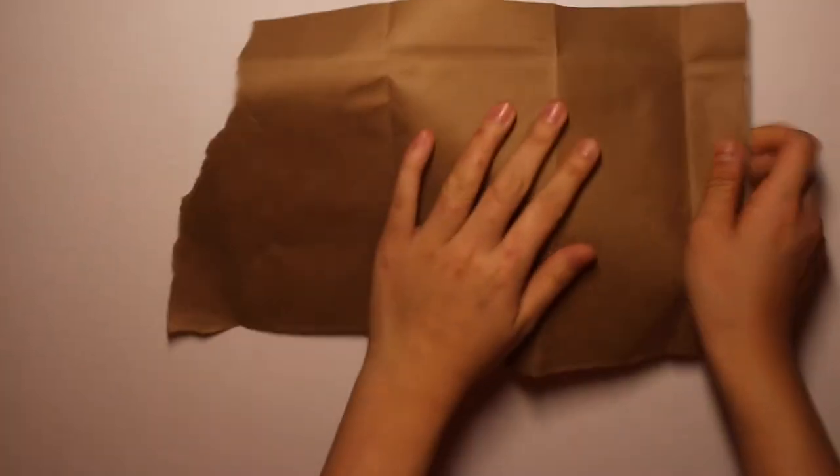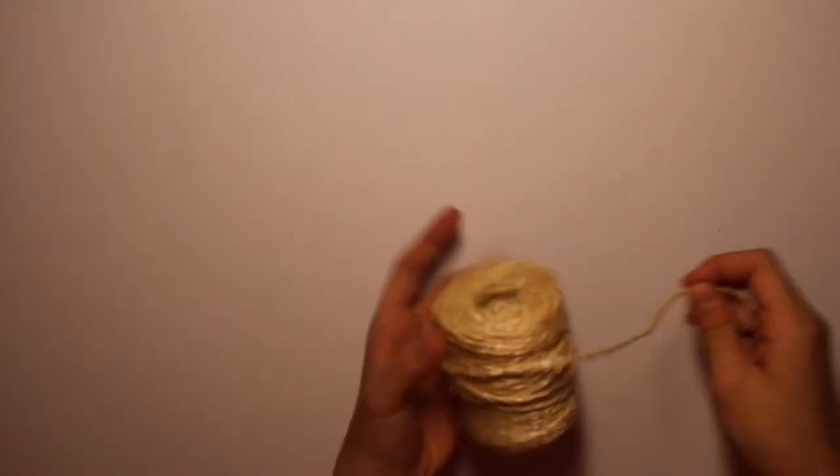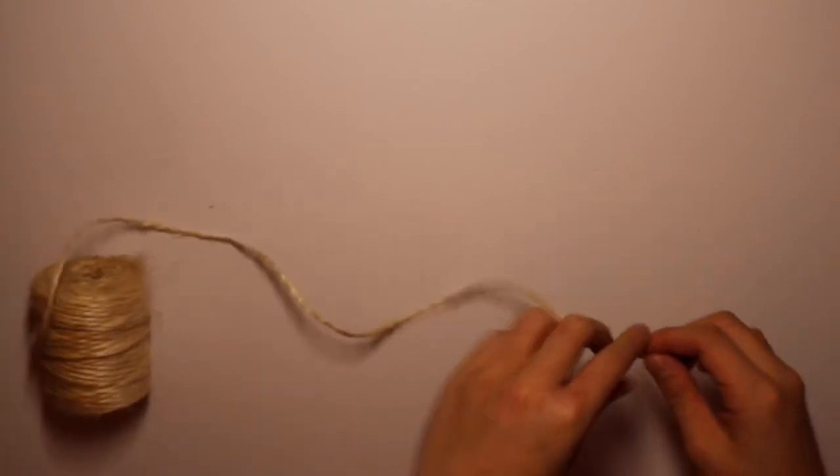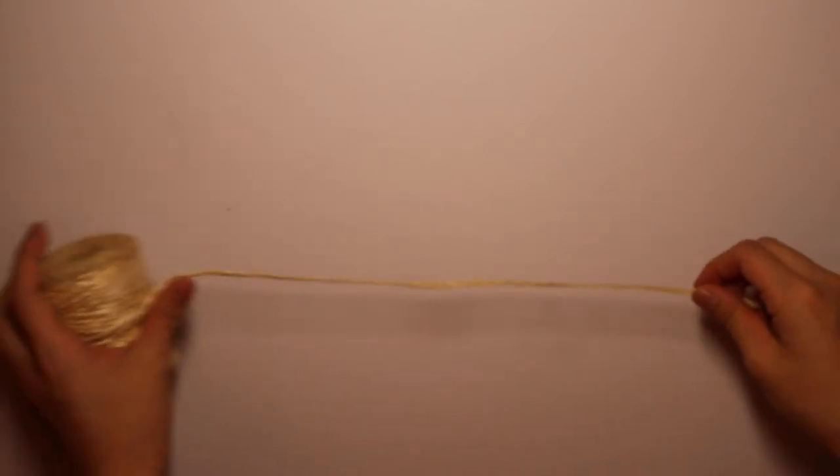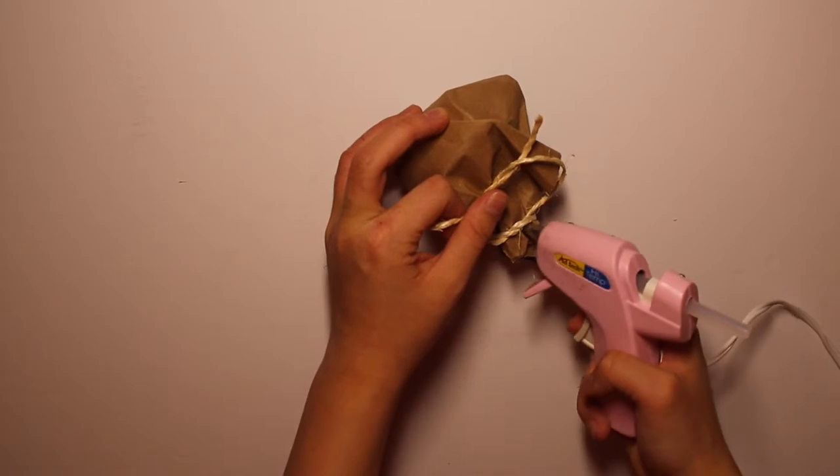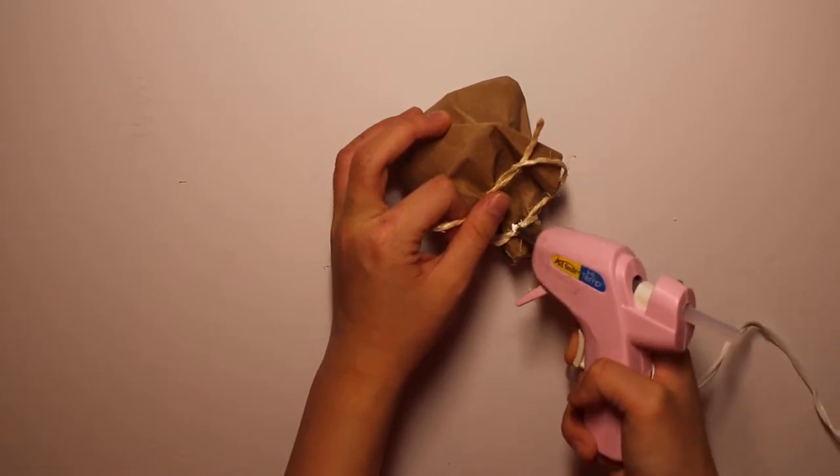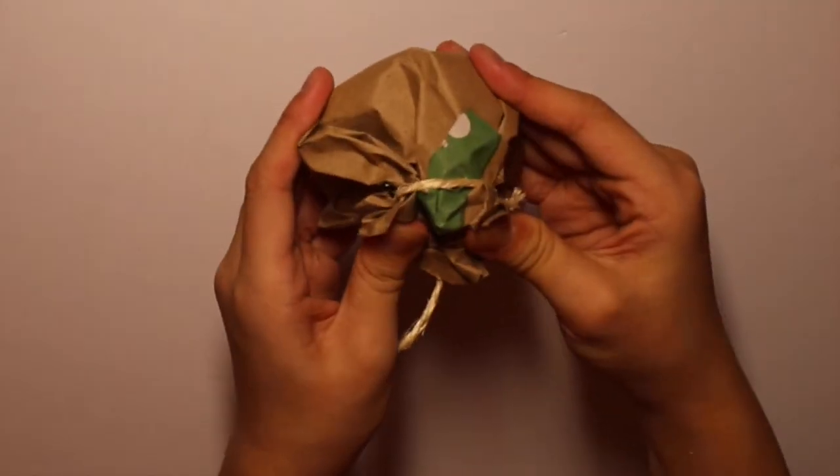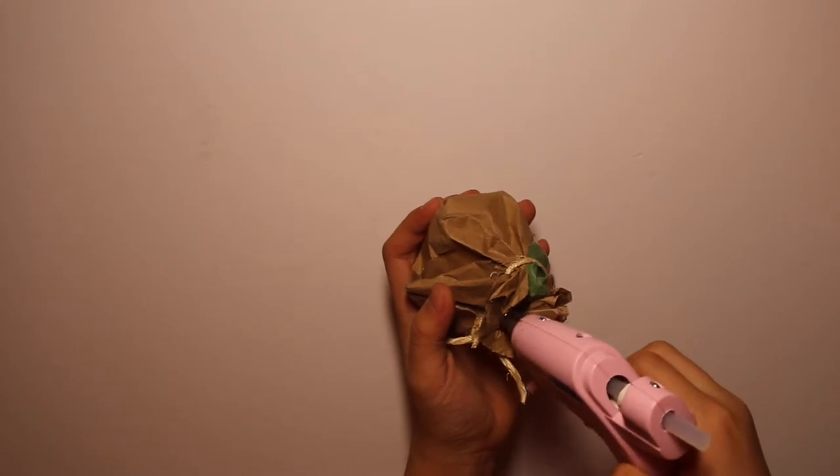And now you're going to get a scrunched up piece of paper bag and take another piece of paper bag and then wrap it around there to make a circular form. And then cut a piece of twine and wrap it around the paper bag and just tie it off. And now you're just going to want to fan out the paper bag so it has a flat surface to put on the magazine.